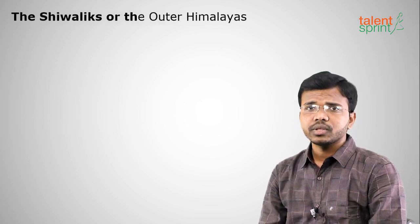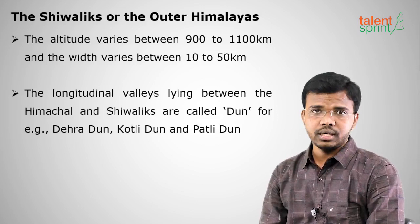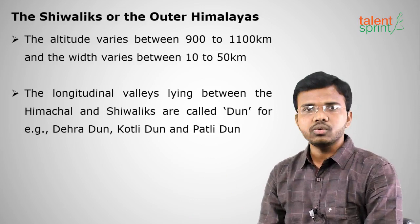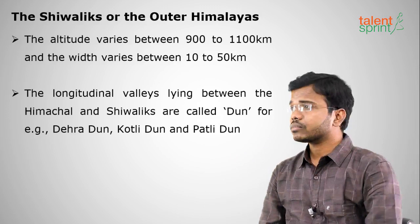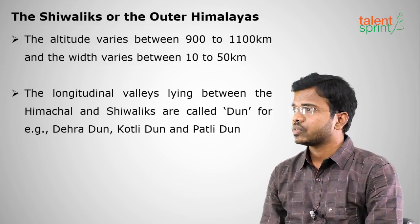The Shivaliks or Outer Himalayas are the southernmost part of the Himalayas. They are famous for duns — longitudinal valleys — such as the Dehradun in Uttarakhand and Kotli and Patli duns. The mountain heights here range from 900 to 1100 meters.